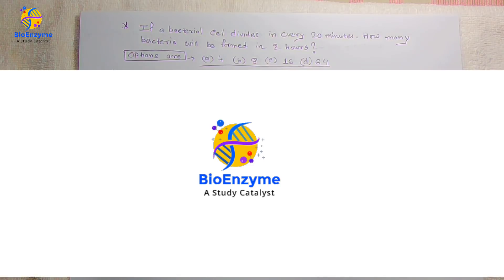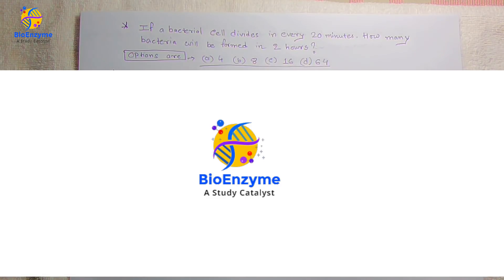The first question is: if a bacterial cell divides every 20 minutes, how many bacteria will be formed in two hours? Four options are given: 4, 8, 16, and 64. We need to find which one is correct.